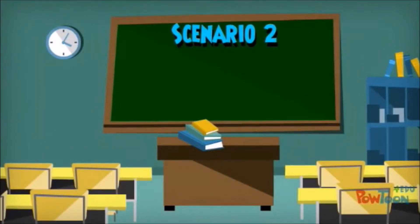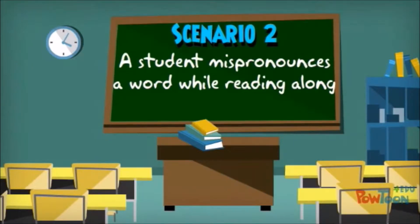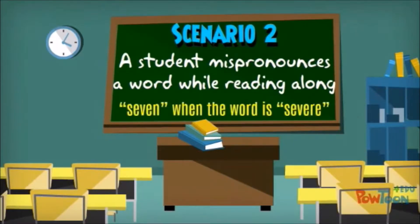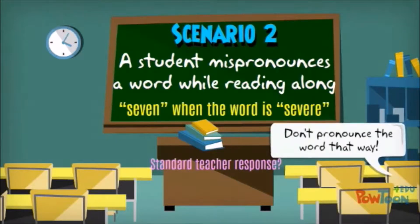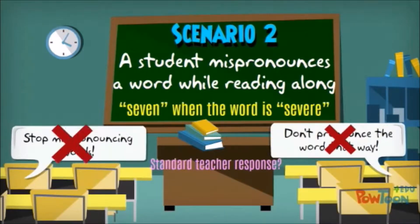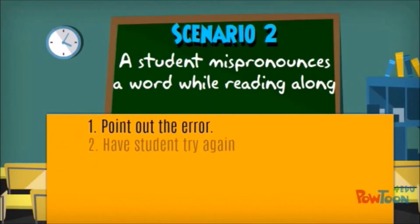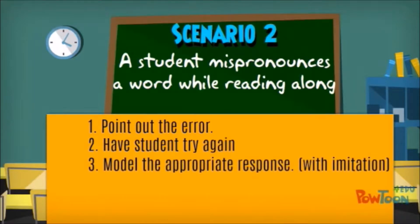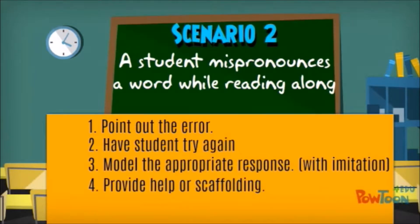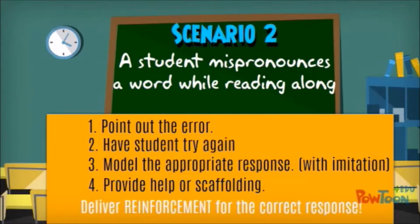Now let's look at the second scenario. A student mispronounces a word while reading — for example, the student says 'seven' when the word is 'severe.' A standard teacher response here is very different: a teacher wouldn't say 'Don't pronounce the word that way.' Instead, the teacher would point out the error, have the student try again, perhaps model the word, and have the student read it back. When the student pronounces the word correctly, the teacher acknowledges that the student has performed the academic behavior correctly.